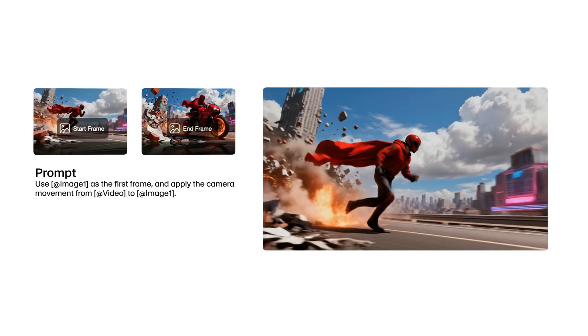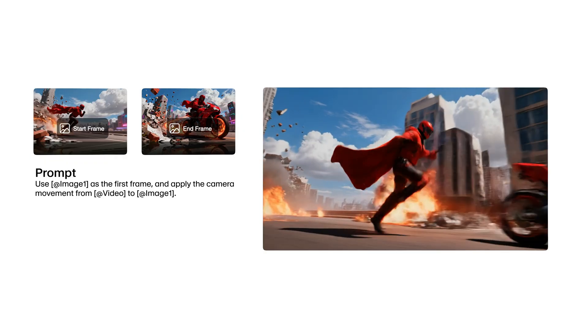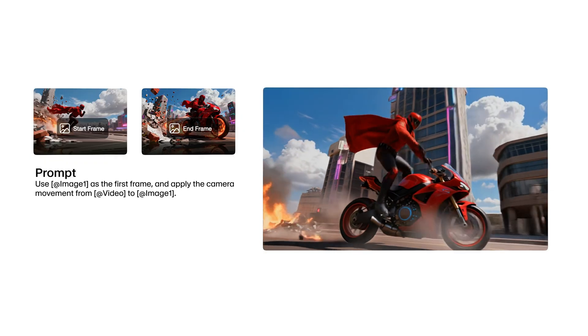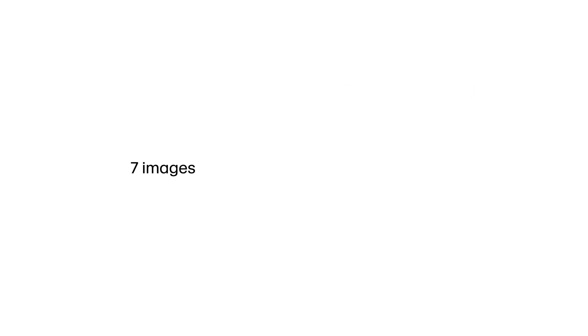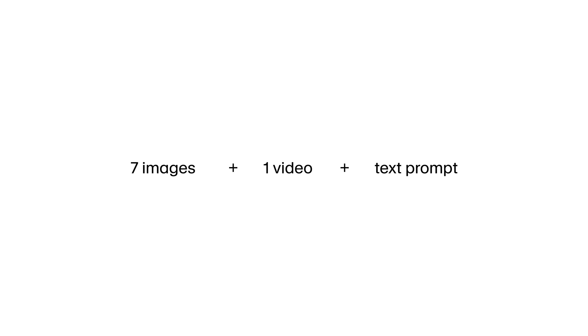And as always, you can specify start and end frames to direct exactly how a scene transitions. You can upload up to seven images and one video clip, along with the text prompt per generation.